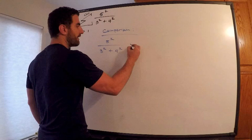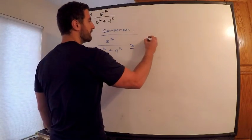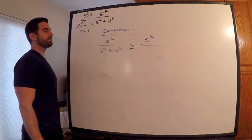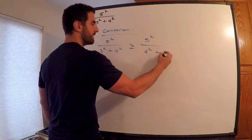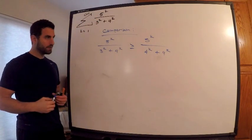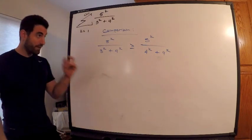Well, I claim after some thought that this is greater than or equal to 5^k divided by 4^k plus 4^k. So what did I do here? What I did basically was I increased the denominator.